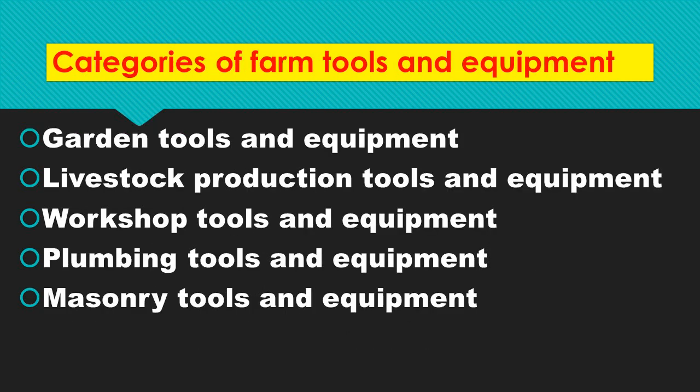What are some of the categories of farm tools and equipment? We have gardening tools and equipment, livestock production tools and equipment, workshop tools and equipment, lambing tools and equipment, and machinery tools and equipment. But today we are going to look at gardening tools and equipment.